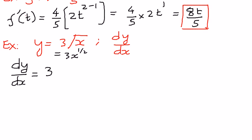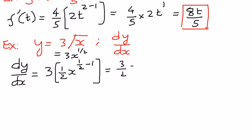When we find the first derivative of this given function, dy by dx is equal to 3, which is a constant put outside, times the derivative of x to the power of one half. Here n is equal to one half, so we get one half times x to the power of n minus 1, which is one half minus 1. When we simplify, this is going to be 3 times one half, which is 3 over 2, times x to the power of one half minus 1, which is negative one half.